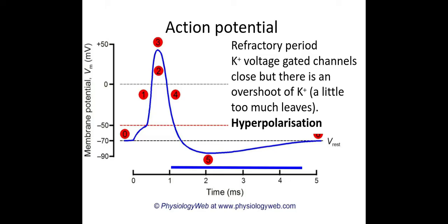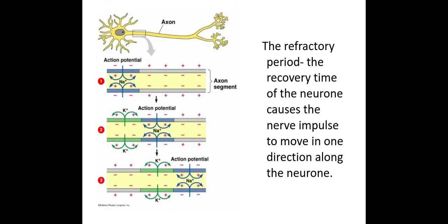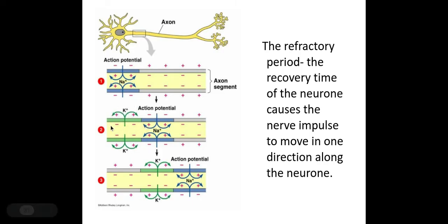Hyperpolarisation is really important because it allows the impulse to travel in one direction along the neuron. An action potential occurring at one part of the neuron triggers sodium voltage-gated channels to open in the next part of the neuron. However, because the previous part of the neuron is undergoing repolarisation and then hyperpolarisation in the refractory period, it takes time to recover. An action potential can only occur where there is resting potential in the membrane, so therefore an action potential can only travel in one direction along the membrane.